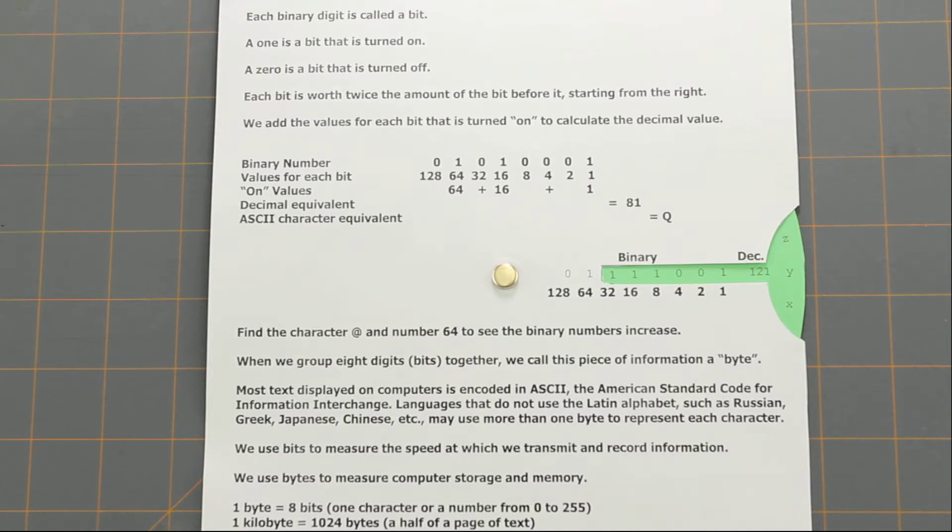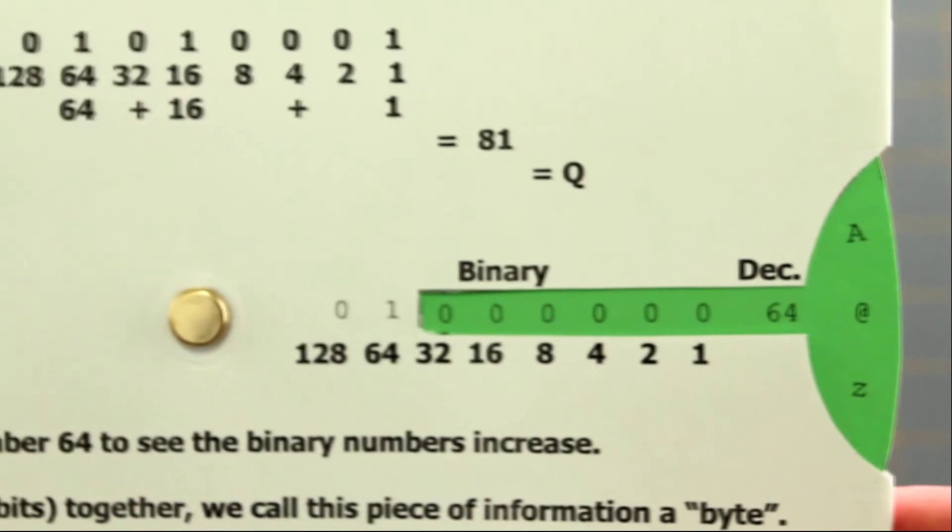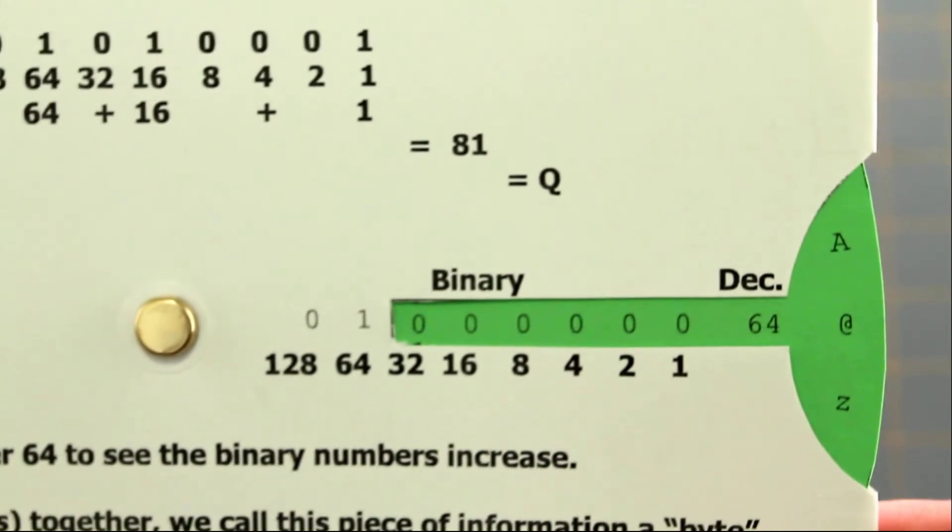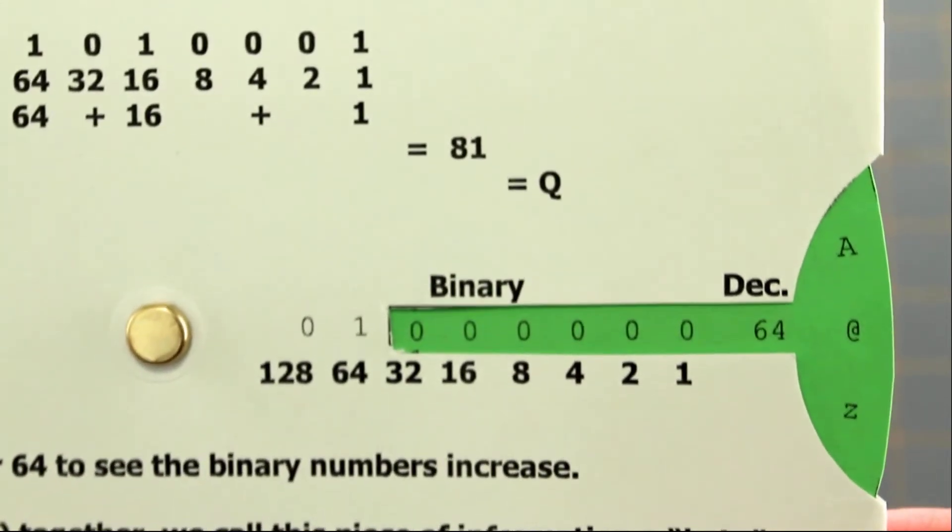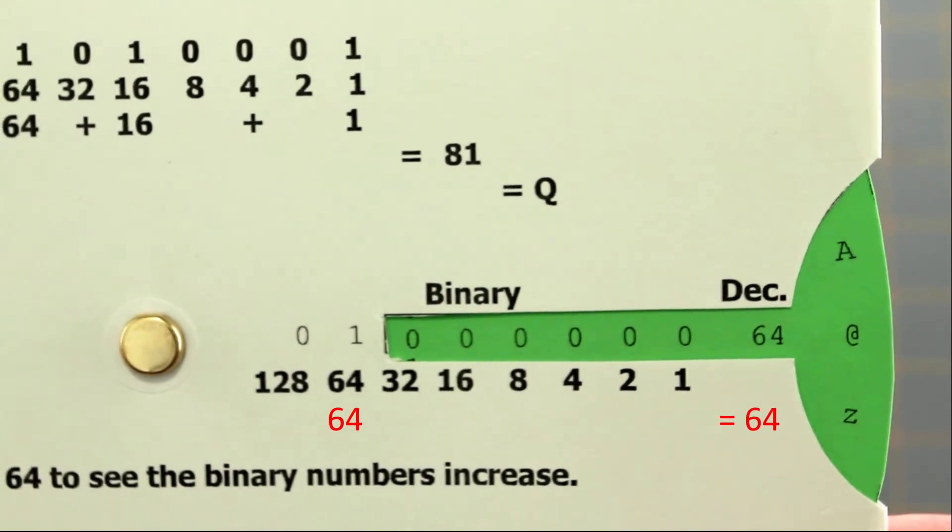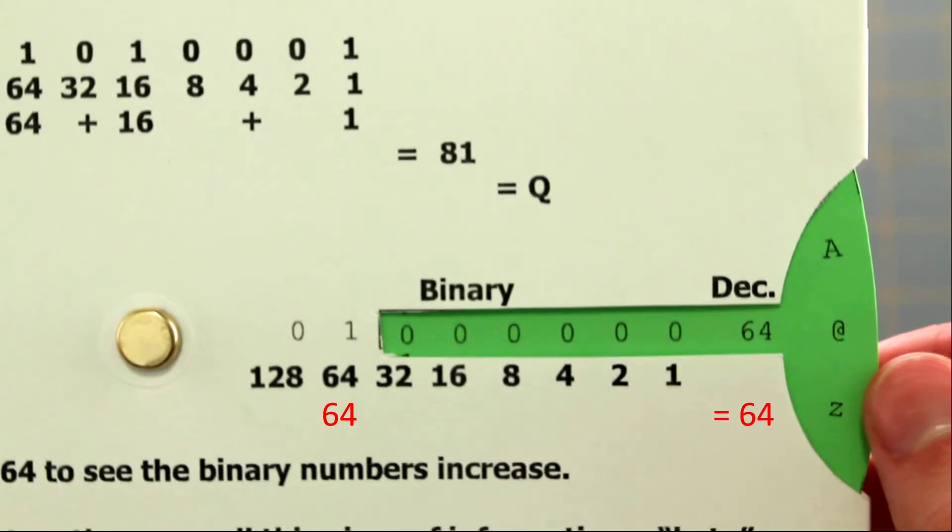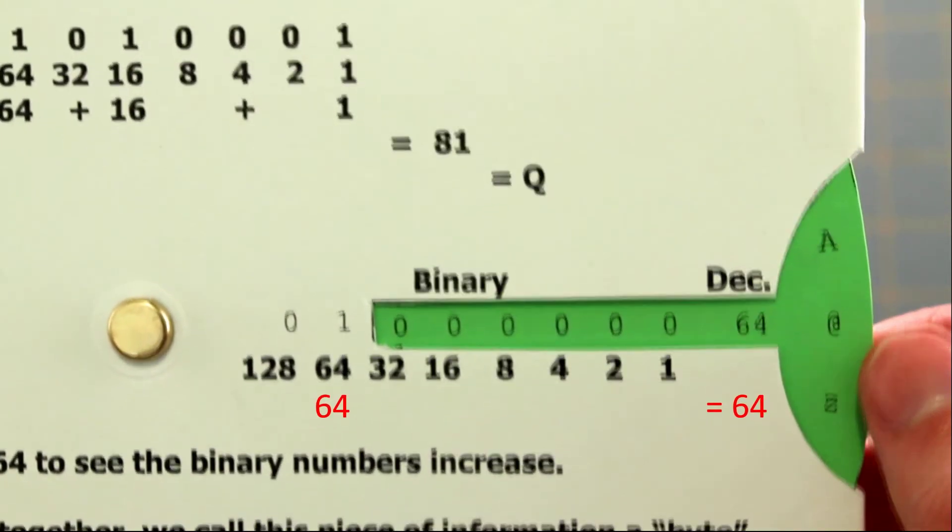We can see how binary numbers work by starting with the decimal number 64, which represents the at symbol. This binary number is equivalent to 64 in decimal because there is a 1 in the 64's position, indicating that the 64's position is turned on. All of the other positions are turned off, indicated by the 0.